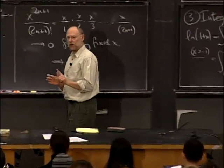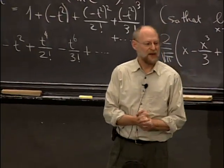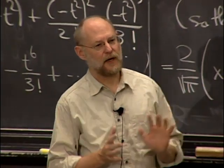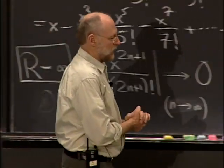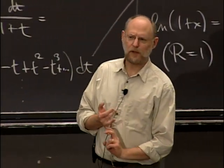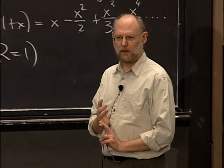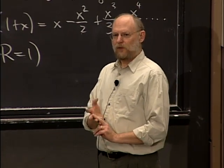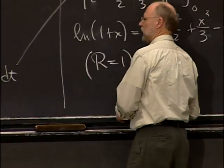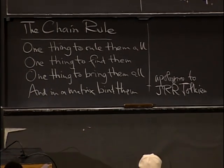Professor Jerison wanted me to make an ad for 18.02, just in case you were thinking of not taking it next term — you really should take it. It will put a lot of things in this course into context. It's about vector calculus, and it comes back and explains some things in this course that might have been a little bit strange, like the strange formulas for the product rule and the quotient rule. One of the things you learn in 18.02 is that they're all special cases of the chain rule.